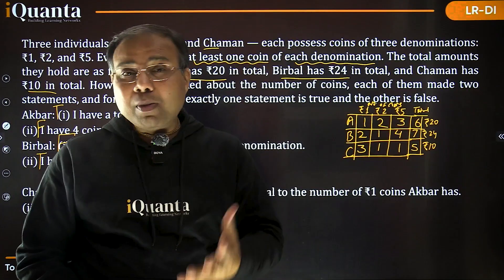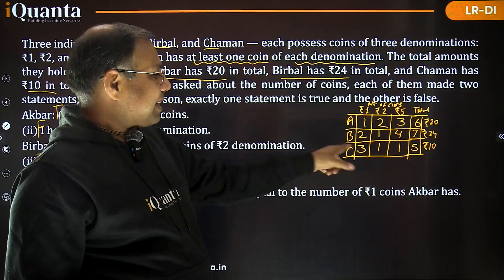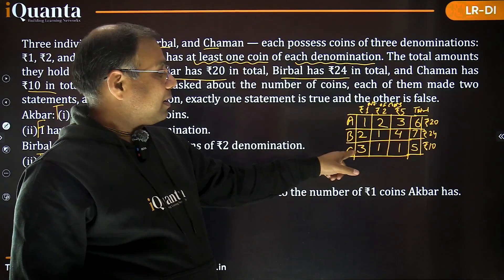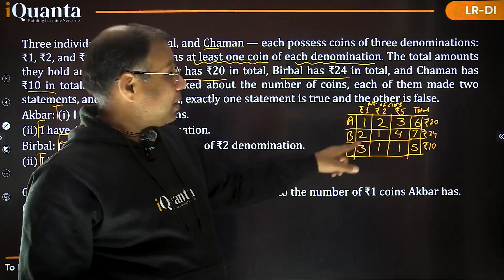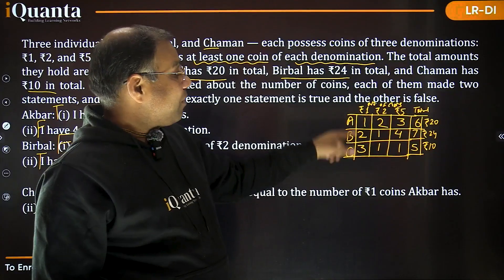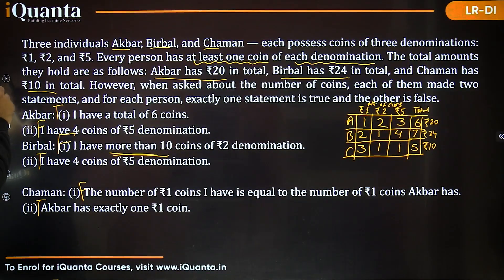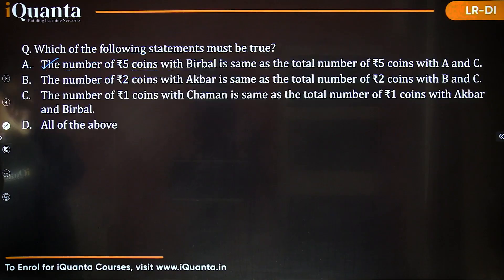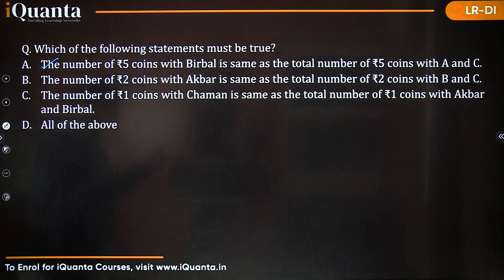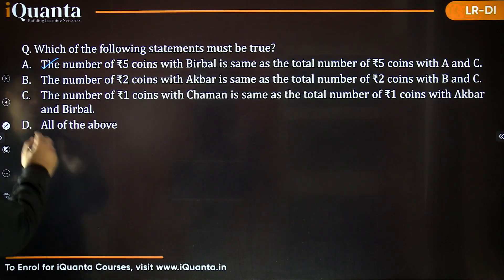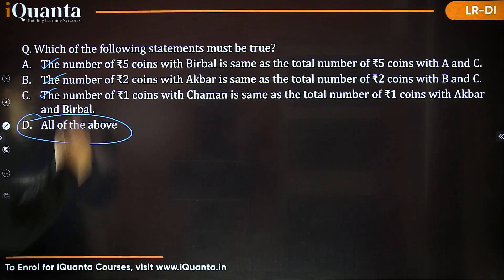The third statement is also confirmed true: the number of ₹1 coins with Chaman (3) equals the total ₹1 coins with A and B combined (1+2=3). All three statements are true, confirming option D.